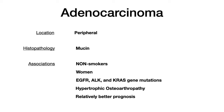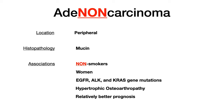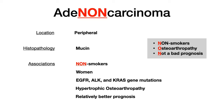Because these atypical features are the highest-yield part of learning adenocarcinoma, you need a mnemonic. Think adenocarcinoma in NON-smokers: N for non-smokers, O for osteoarthropathy (that nail clubbing), and the last N for not a bad prognosis. So the NON mnemonic reminds you of the atypical features and that high-yield association of hypertrophic osteoarthropathy. That's adenocarcinoma of the lung.